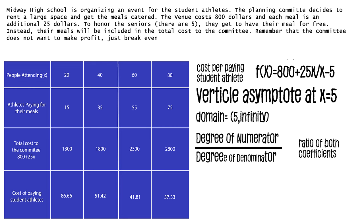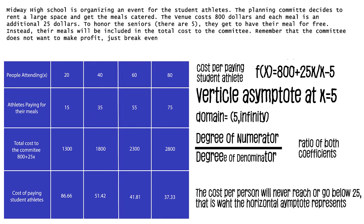But what does that actually mean in real life? This asymptote demonstrates how the cost per person will never, ever reach $25, but it may get really close to it depending on the amount of people. It will never touch 25 or go beyond $25.